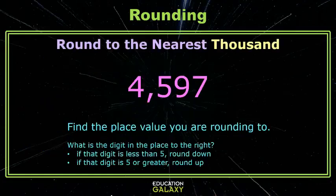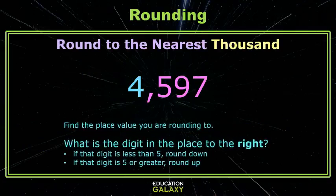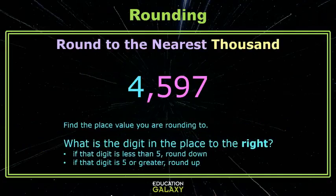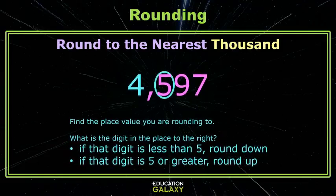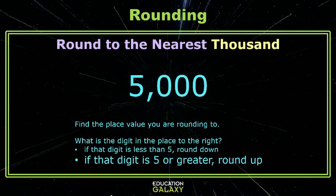Let's take a look at this example. Here we're going to round to the nearest thousand. Which digit's in the thousand's place? It is the 4. Now check the digit to its right, which is the 5. That 5 meets our rule of 5 or greater, so we round up to the next nearest thousand. From 4,597, the next thousand is 5,000.